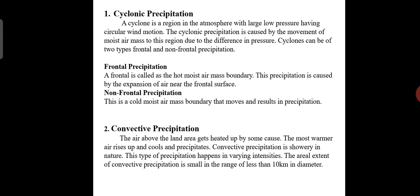The second form is convective type. The air above the land area gets heated up by some cause. The most warmer air rises up and cools and precipitates. Convective precipitation is showery in nature.